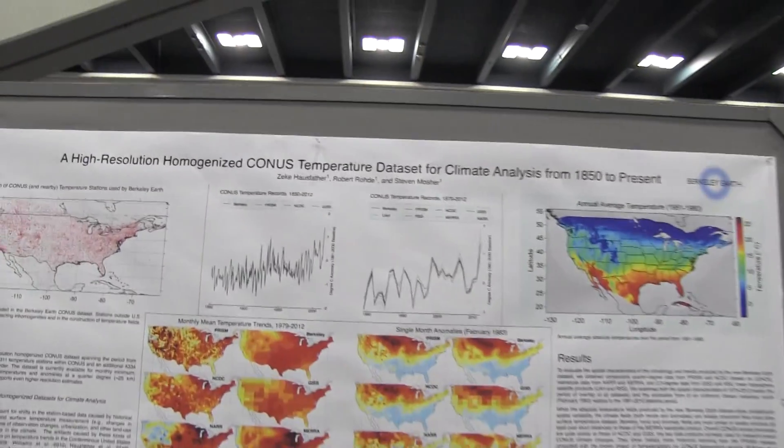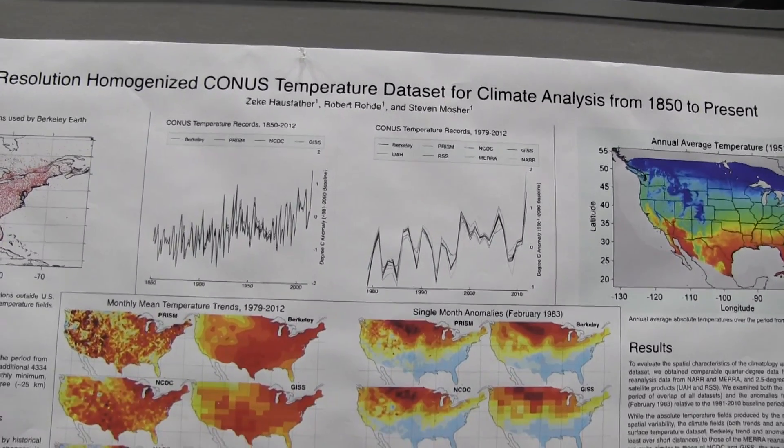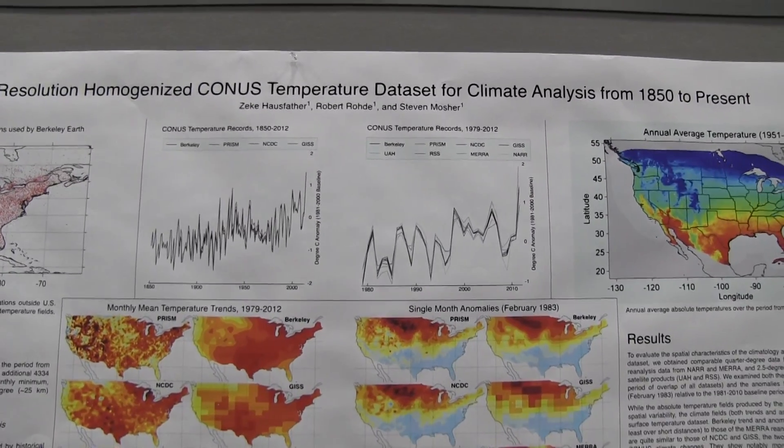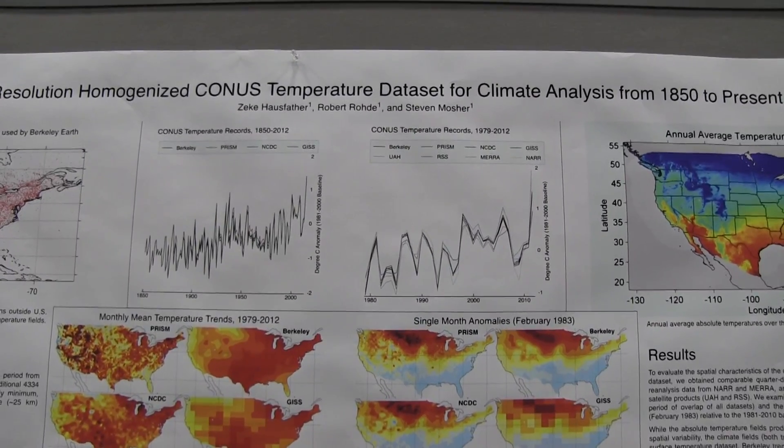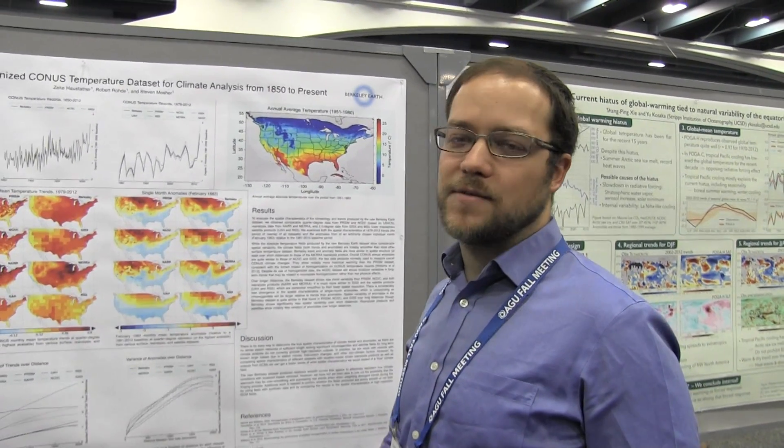I noticed your graph shows the temperature record from 1850 to 2012 on the left and 1979 to 2012 on the right, with no error bars on either — why is that? We do have error bars for the Berkeley record. The main reason they're not plotted here is because the graphs are already pretty noisy and it would make it harder to see the other lines. But if you download the data from our website, it all comes with error estimates, both on an aggregate level and on an individual grid cell level for each month. We've always been focused on producing the most realistic error estimates possible, something not all other groups have done.